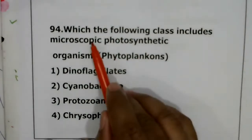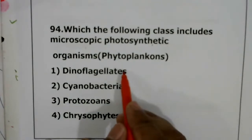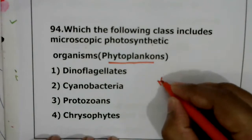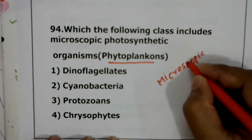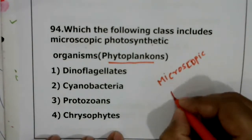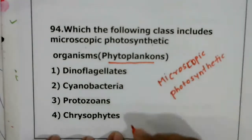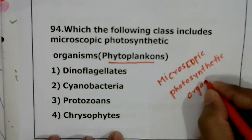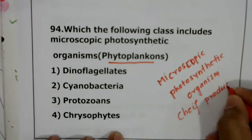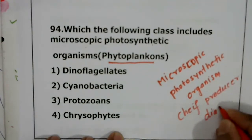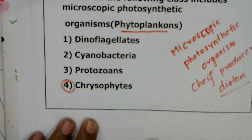Question 94: which class includes microscopic photosynthetic organisms? Phytoplankton are microscopic photosynthetic organisms. They are chief producers — the main producers in aquatic ecosystems. An example is diatoms, and diatoms belong to the class Chrysophytes. The correct answer for question 94 is Chrysophytes.